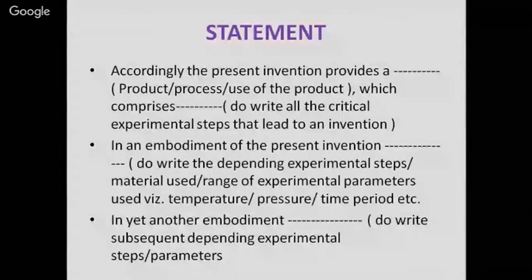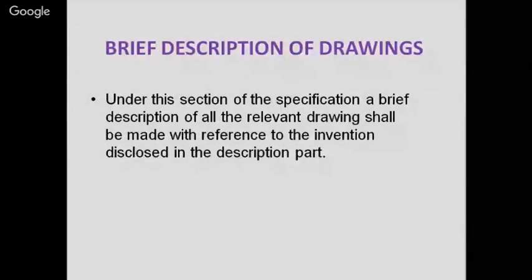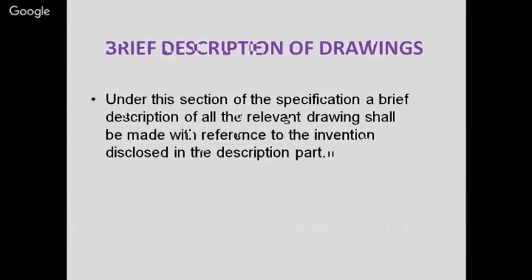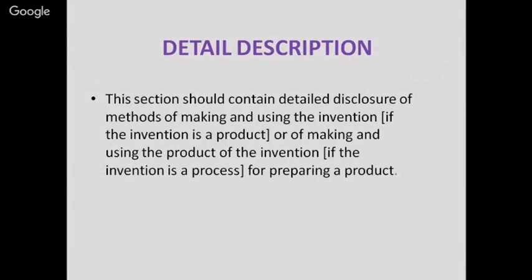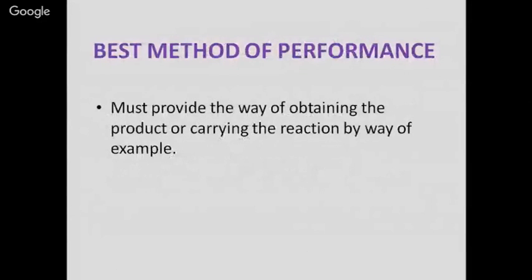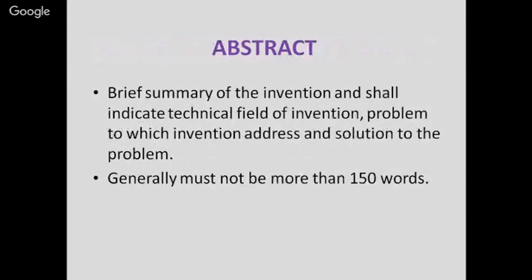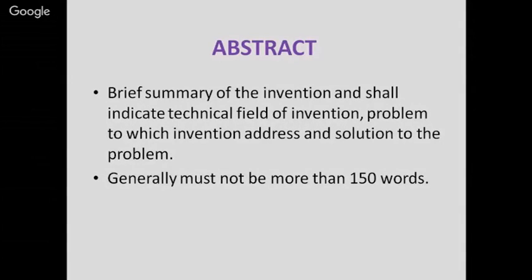In an embodiment of the present invention, we write the depending experimental steps, materials used, and range of experimental parameters such as temperature, pressure, and time period. In yet another embodiment we write subsequent experimental steps or parameters. A brief description of drawings specifies all relevant drawings made with reference to the invention. The detailed description contains detailed disclosure of the method of making and using the invention. The best method of performance must provide the way of obtaining the product or carrying out the reaction by way of example. The abstract is a brief summary of the invention indicating the technical field, the problem addressed, and the solution — generally not more than 150 words.